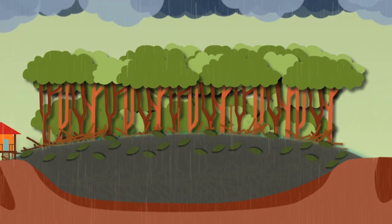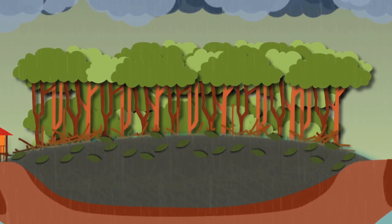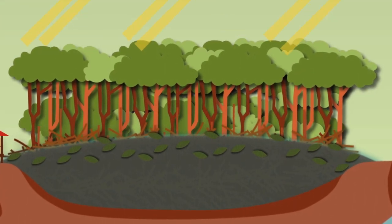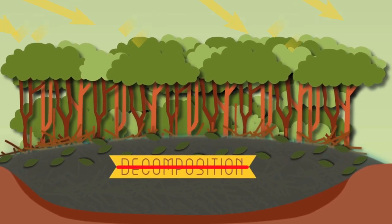It rains a lot in the peat swamp forest. The flatland, forest cover, and sponge-like nature of the peat ensures that the peat remains wet all year around, stopping the decomposition process.